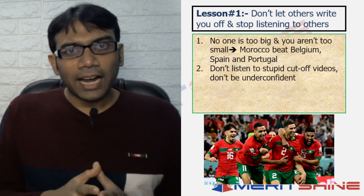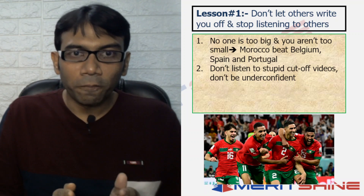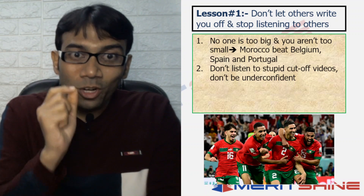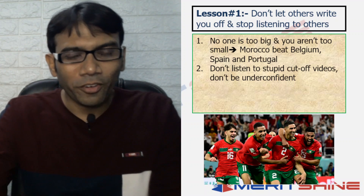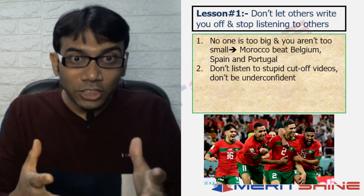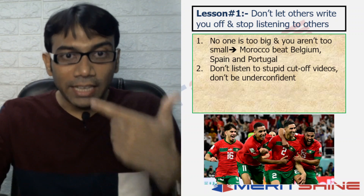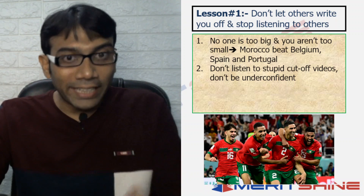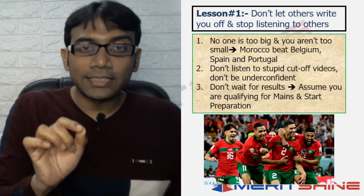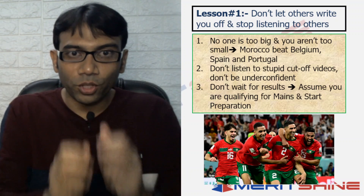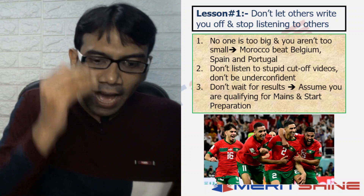There is no reason for you to think that you are small, because Morocco proved that no team is too small and no team is too big. It defeated Portugal, Spain, Belgium — some of the favourites to win the tournament. So be confident in your abilities, your persistence, and your dedication. The manifestation of this lesson for you is: don't wait for results.